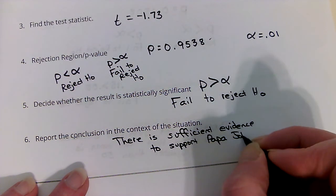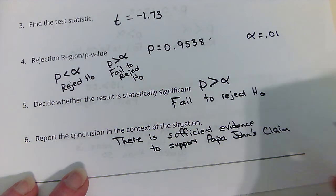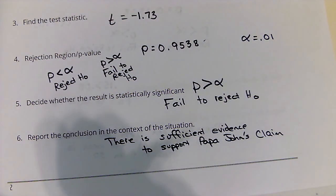Be careful in some of these. I know I said the claim would always be the alternative. So since they said 30 minutes or less, the claim actually included the equals to, so it was actually the null, and I know that gets a little tricky.